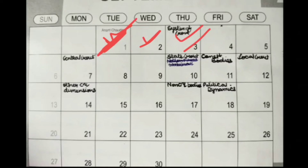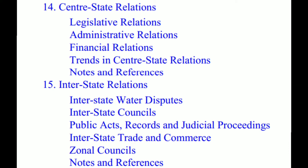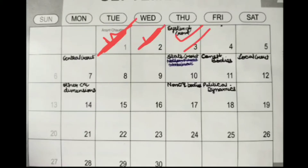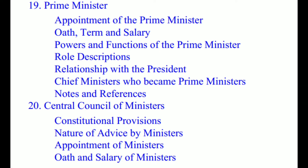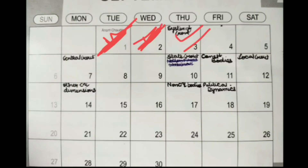So in day one you're completing chapters 12, 13, 17, and 18. This leaves you with chapters 14 and 15 for day two — Prime Minister and Central Council of Ministers — heading towards completing the system of government.